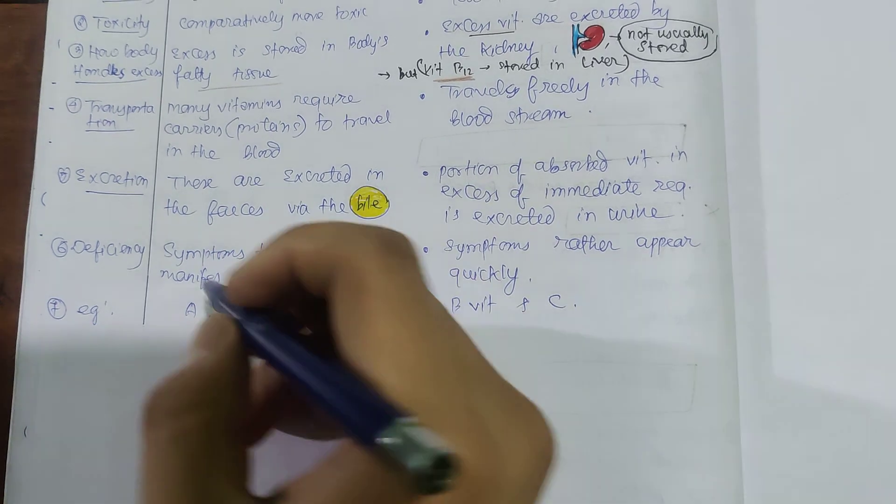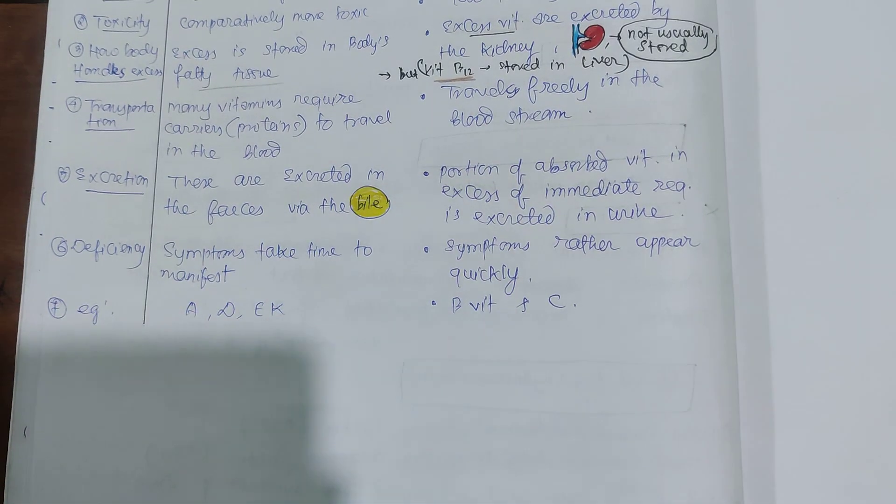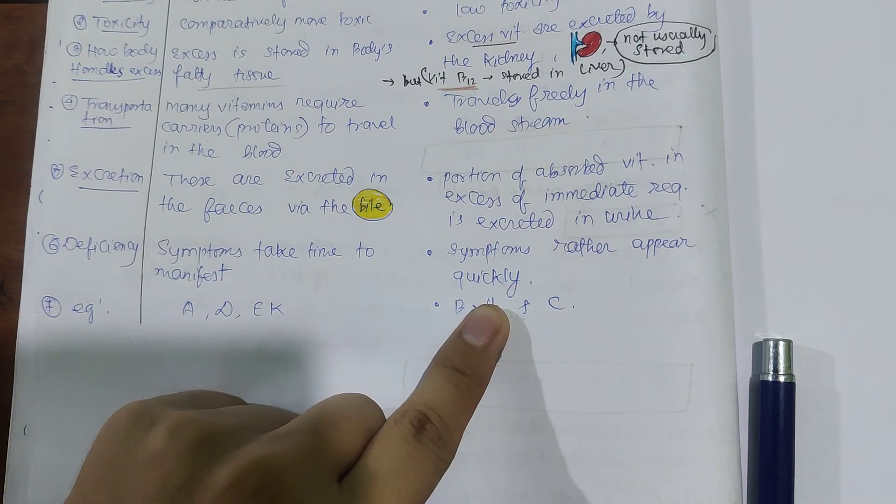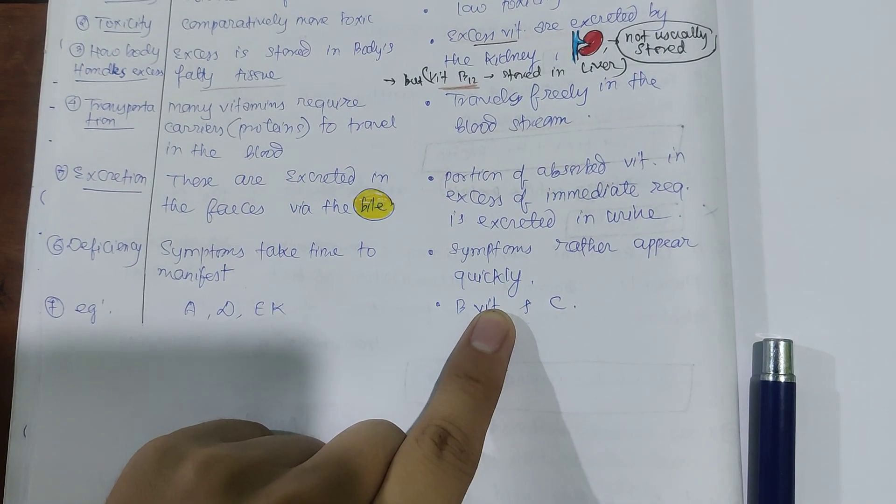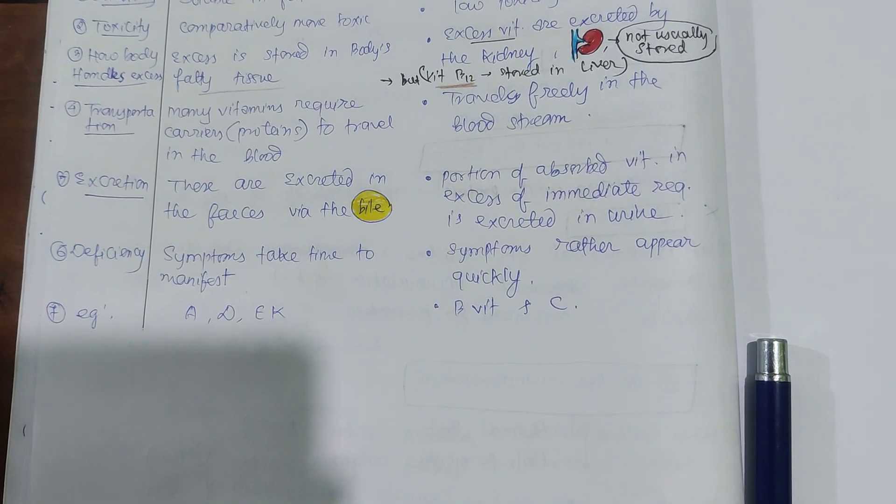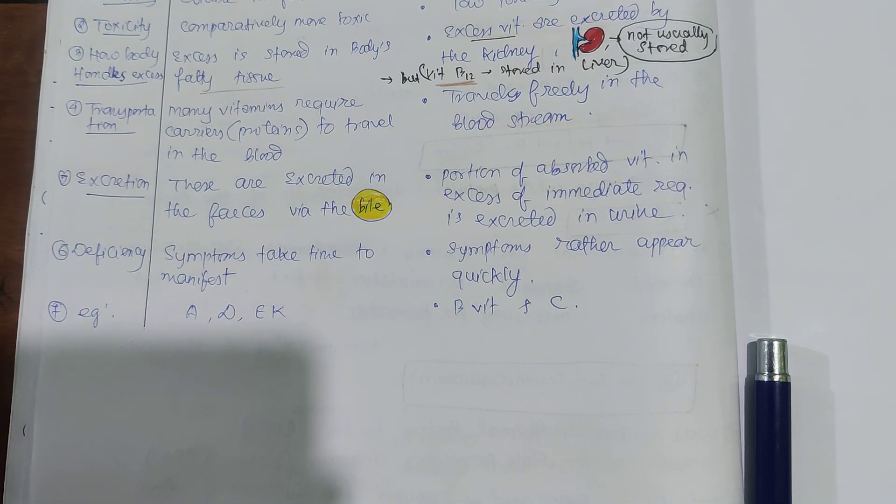Deficiency symptoms: For fat-soluble vitamins, symptoms take time to manifest. But for water-soluble vitamins, symptoms rather appear quickly. Examples: A, D, E, K, and vitamin B and vitamin C.